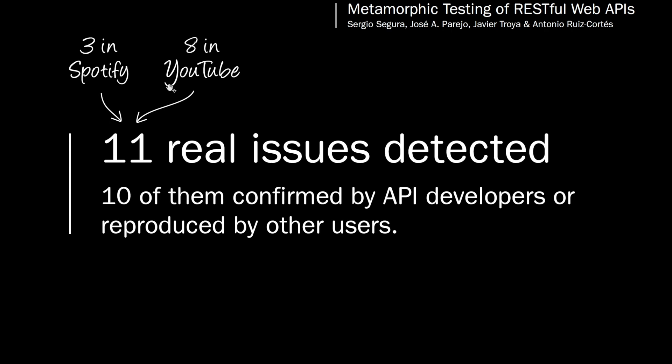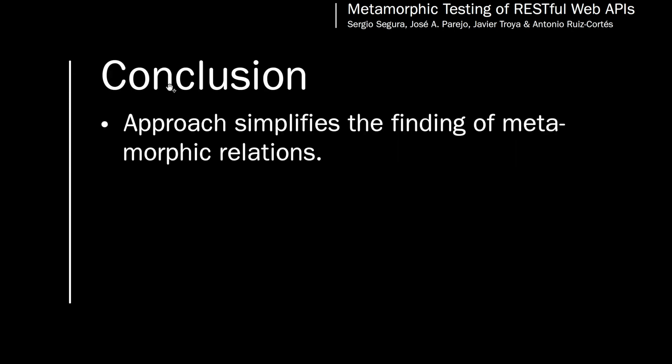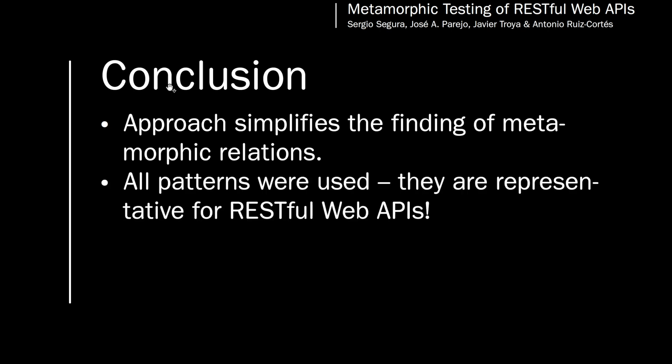10 of the issues were confirmed by the API developers or reproduced by other users. The authors claim that using these patterns and the proposed methodology, the identification of metamorphic relations was straightforward, turning the general problem into a much simpler one — deciding which pattern or patterns fit best. Following this procedure, over 90 metamorphic relations were discovered easily, including instances of all proposed patterns, which means they are representative for RESTful web APIs.